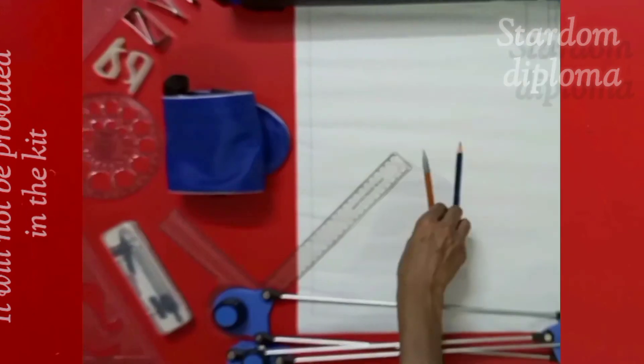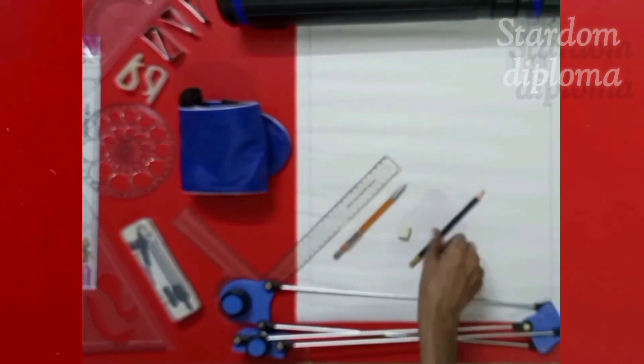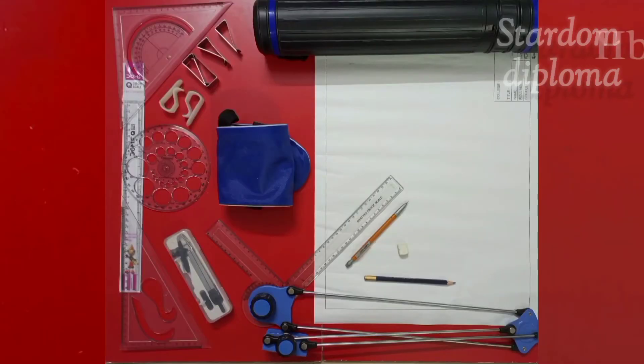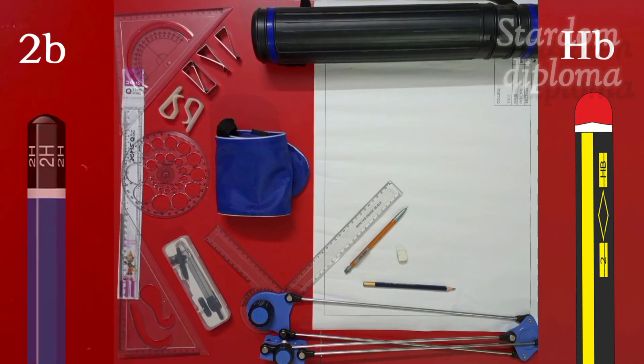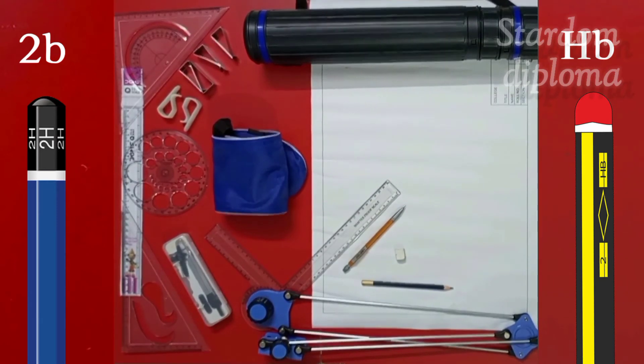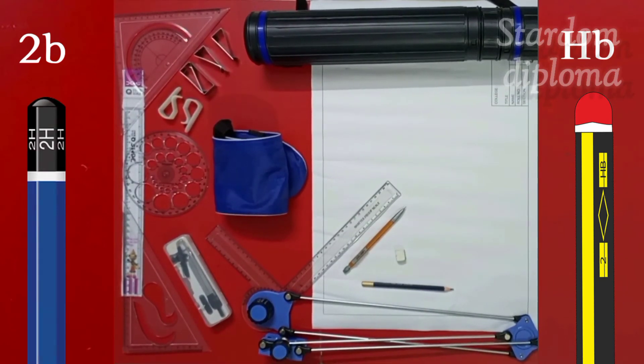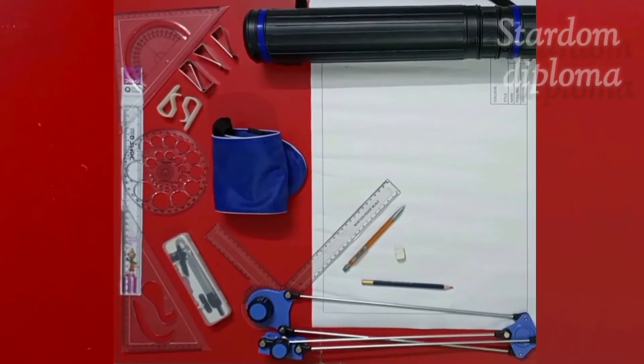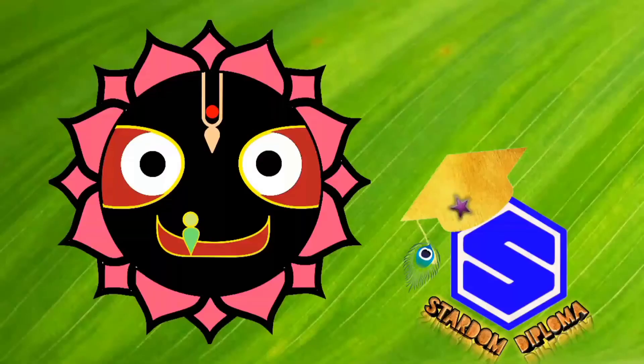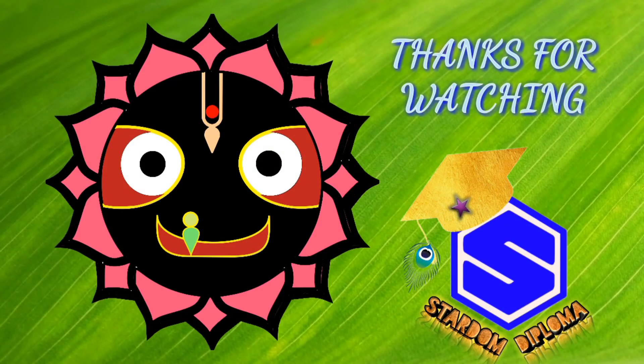And the other thing which we require is the type of pencil. See, generally for drawing, we use HB pencil or 2B pencils. These pencils are used to differentiate between the darker lines and faded lines. So, according to your comfort, you can either choose two different types of pencils or you can use a single pencil in two different ways. So, friends, this is all about the drawing instruments. In our coming videos, we will learn how to draw. And this was today's video. Hope you all start the topic.